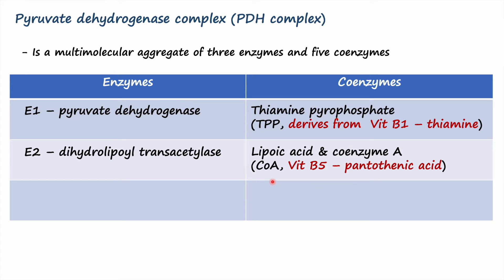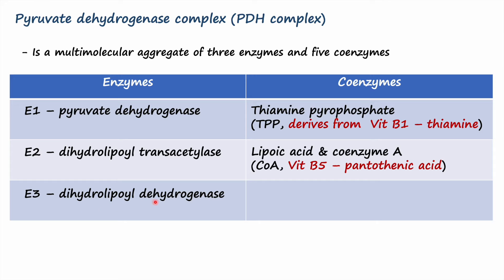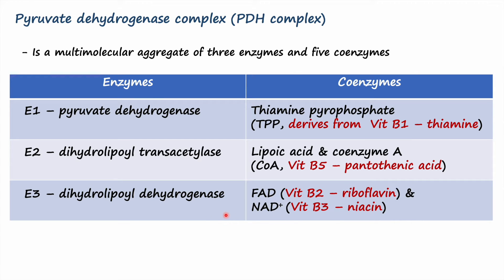Coenzyme A derives from vitamin B5, pantothenic acid. Enzyme E3 is dihydrolipoyl dehydrogenase and is bound to cofactors FAD and NAD+. FAD derives from vitamin B2, riboflavin, and NAD+ derives from vitamin B3, niacin. Now that we know the enzymes and coenzymes, let's talk about the different steps of the reaction.